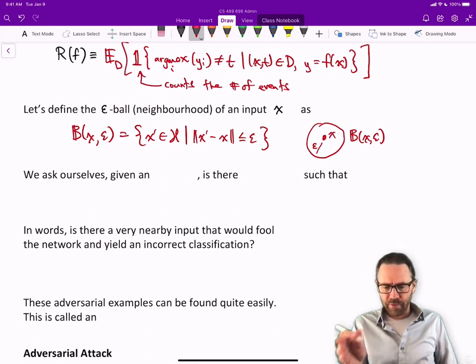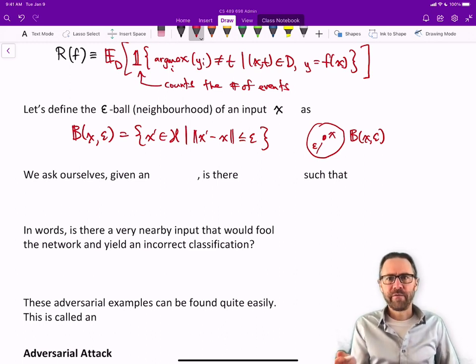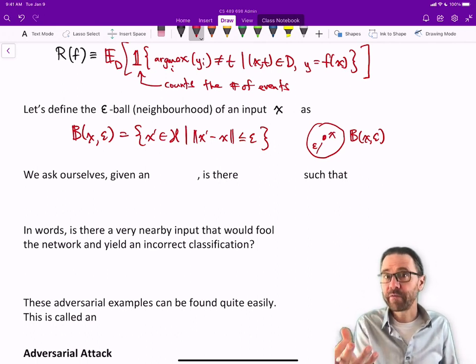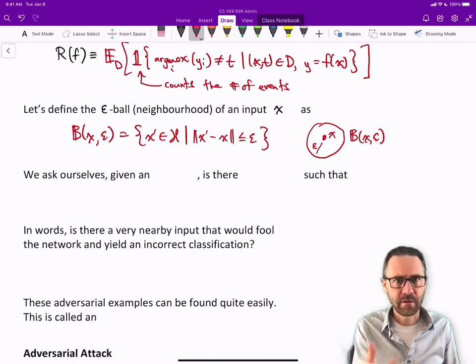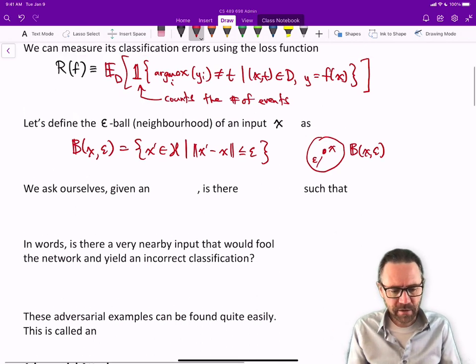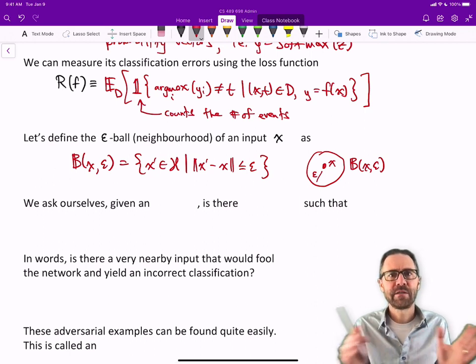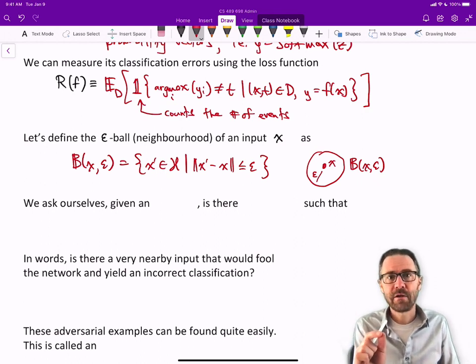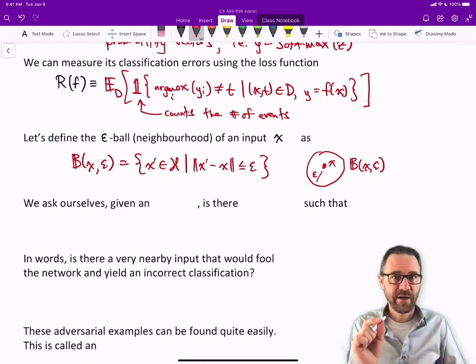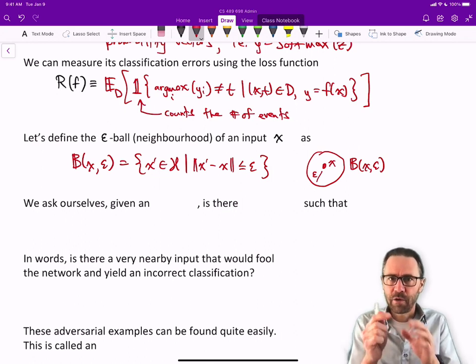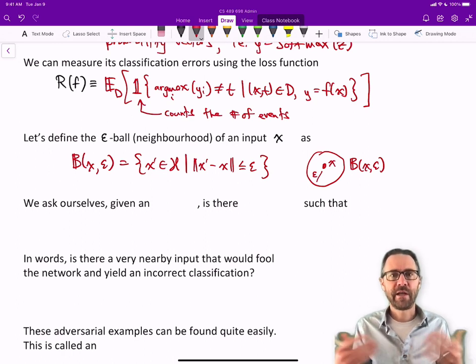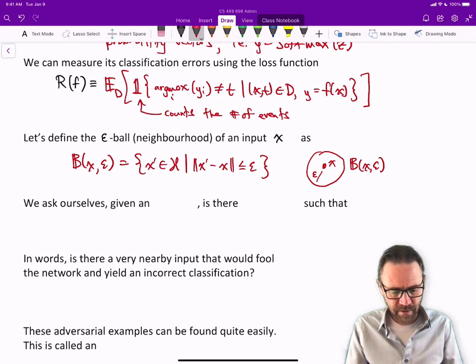The reason we talk about this epsilon ball in the neighborhood of x is because can we take that x in the middle, which is part of our training set, which presumably our model classifies correctly. Our model classifies most things correctly. But in the vicinity or in the epsilon ball neighborhood of one of the correctly classified elements, can we find a misclassified element, another x' that gets classified incorrectly?